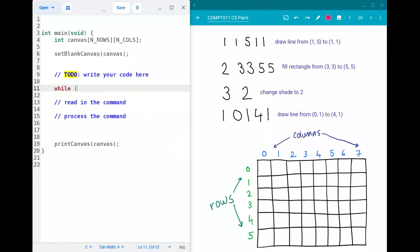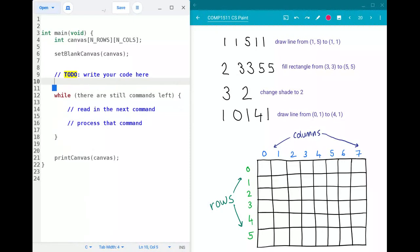So the condition will pretty much be while there are still commands left to process read in the next command to read in the next command and then process that command. In terms of how you'd actually go about doing this a hint in terms of the while loop condition if you think back to the reverse array lab exercise you had to read until end of input so you had to scan in the numbers until you ran out of numbers and then print them out backwards. So as a hint here you're going to want to read until you get to the end of the input which is also often called EOF.